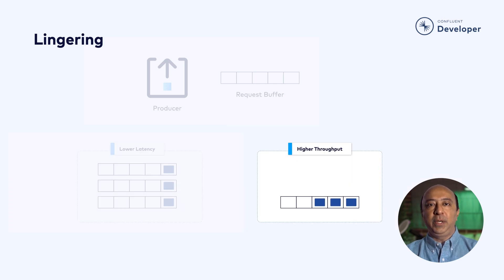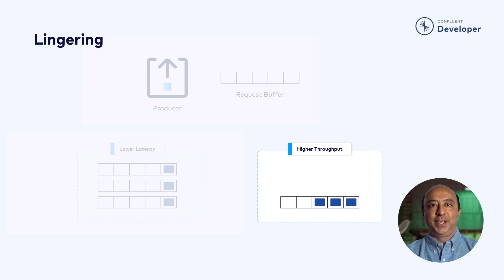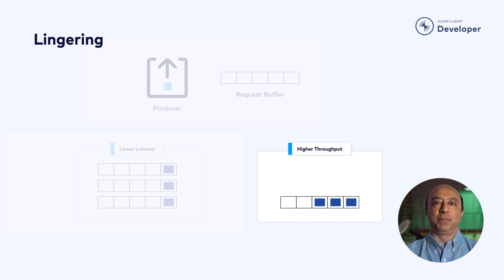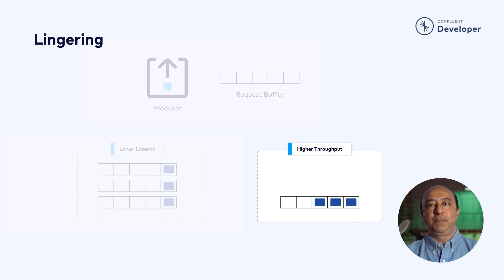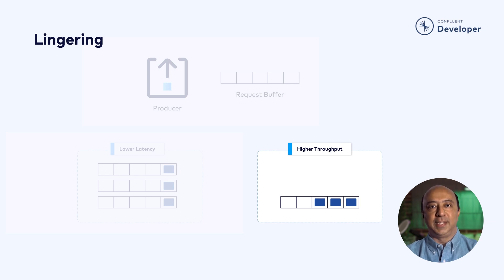Alternatively, we could wait a bit and batch the messages into a single request. As we can surmise, batching messages together allows us to leverage efficiencies in compression and reduce the total number of requests made, thus improving throughput. The downside? Because we kept that first message waiting for the others, the message takes longer to get there, and we get higher latencies.